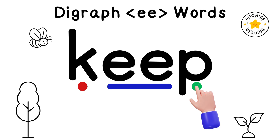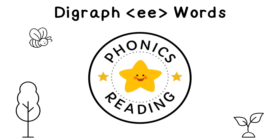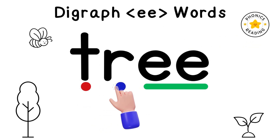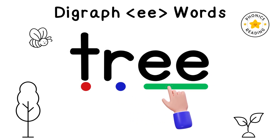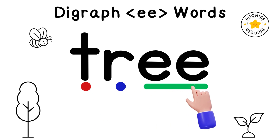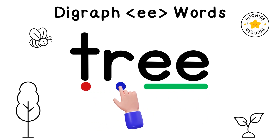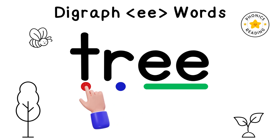You are watching Phonics Reading YouTube channel, and we are learning to read by blending. T, R, E. Tree. You can say Tr, E. Tree.